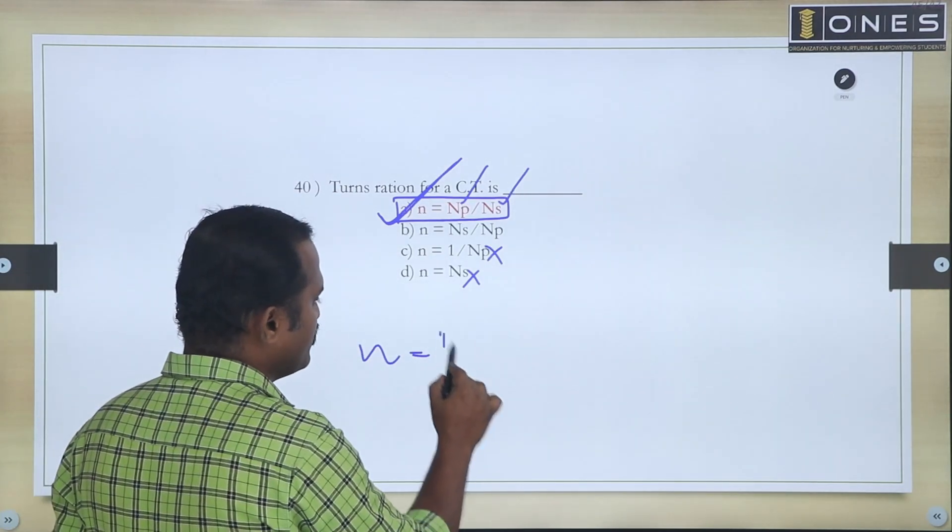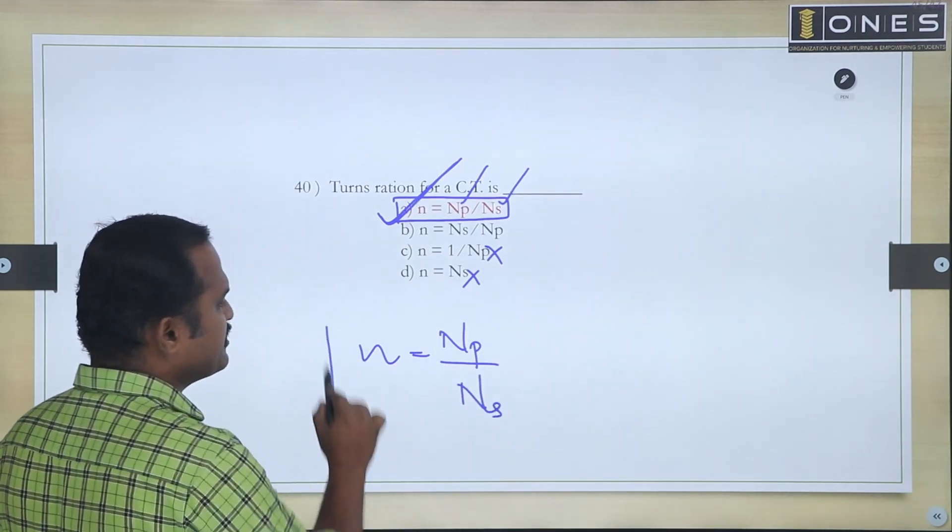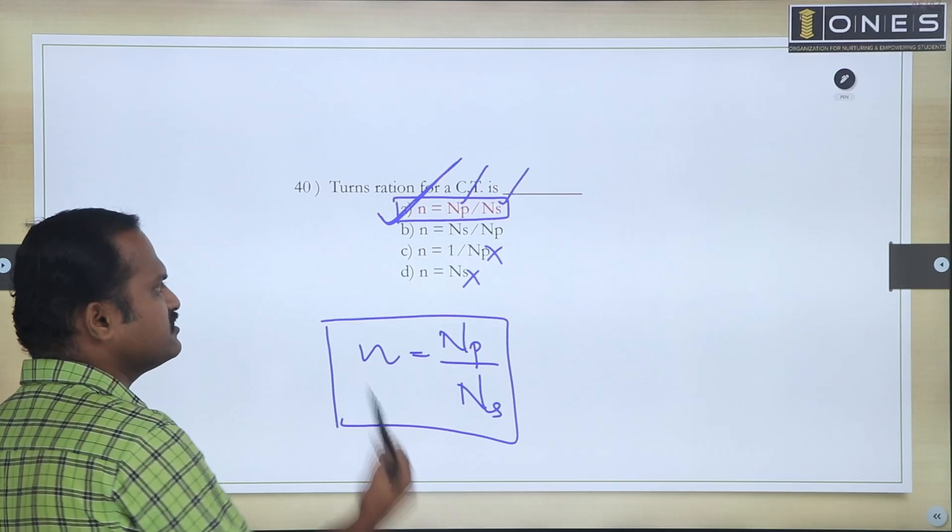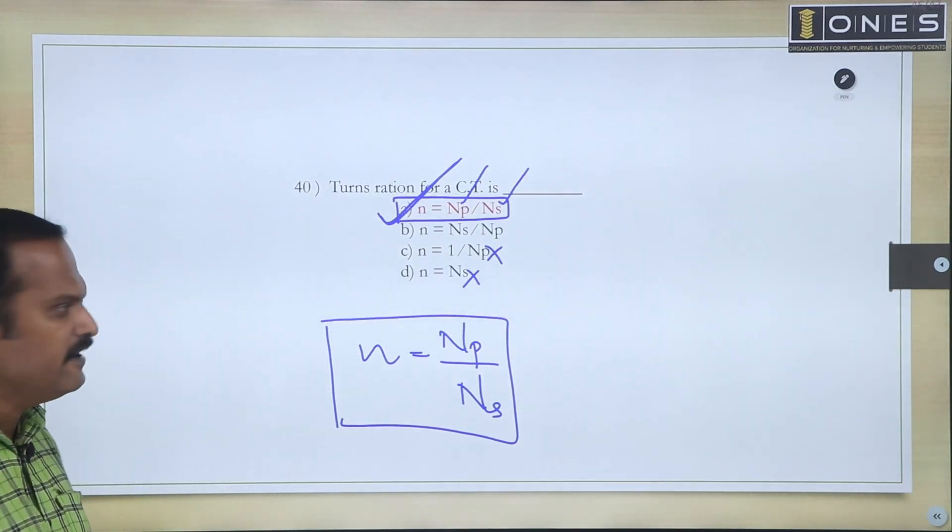So Np by Ns, n equals Np by Ns. This is the turns ratio for CT, so small n equals Np by Ns.